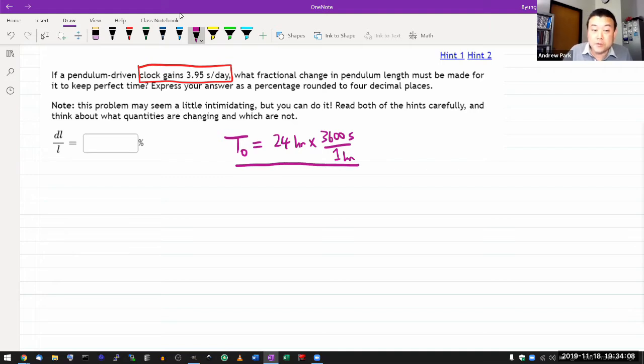But our long period, T1, is this much time plus the additional delta T or 3.95 seconds per day for our numbers here. So, all right. So it's asking for what fractional change in pendulum length. Since it's talking about pendulum length, let's relate pendulum length to period.